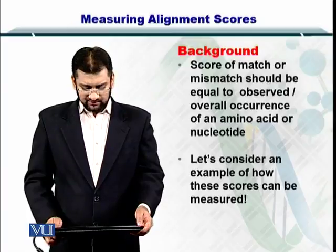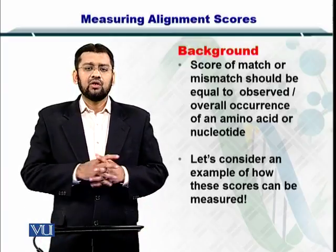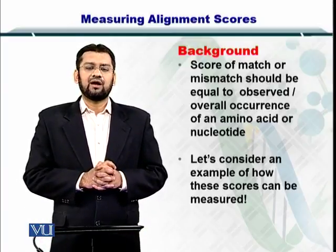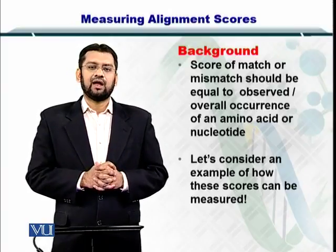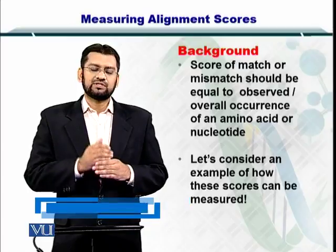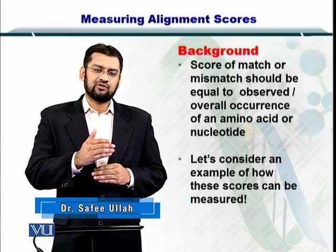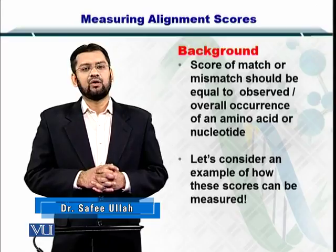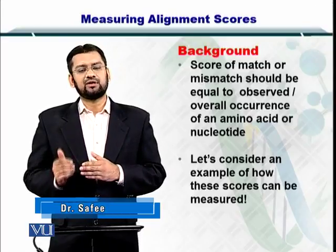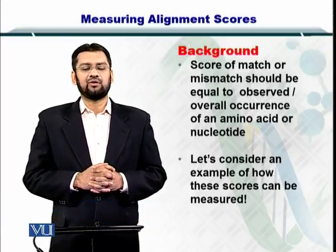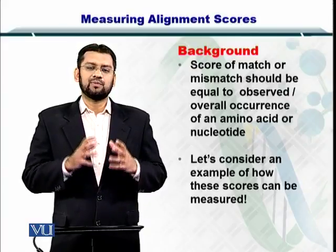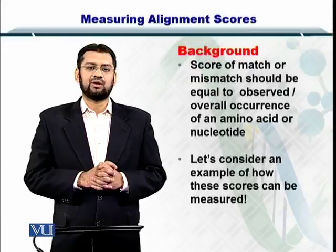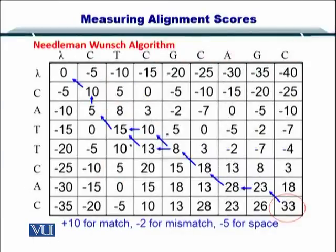So how do we do that? We measure the overall occurrence of amino acids or nucleotides and then see which nucleotide can be replaced by which other more frequently, or which amino acid can be replaced by which other amino acid more frequently. This helps us formulate a scoring scheme that is very useful.